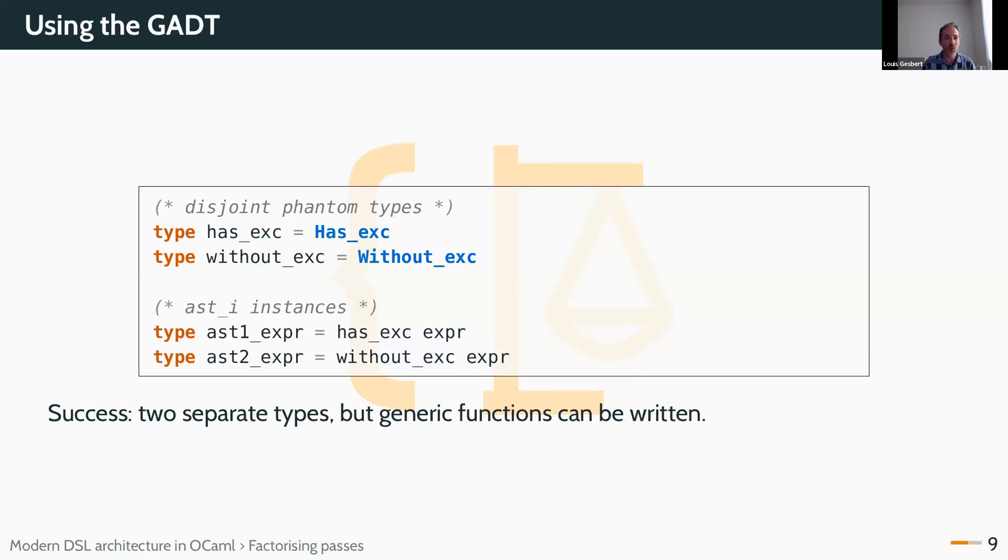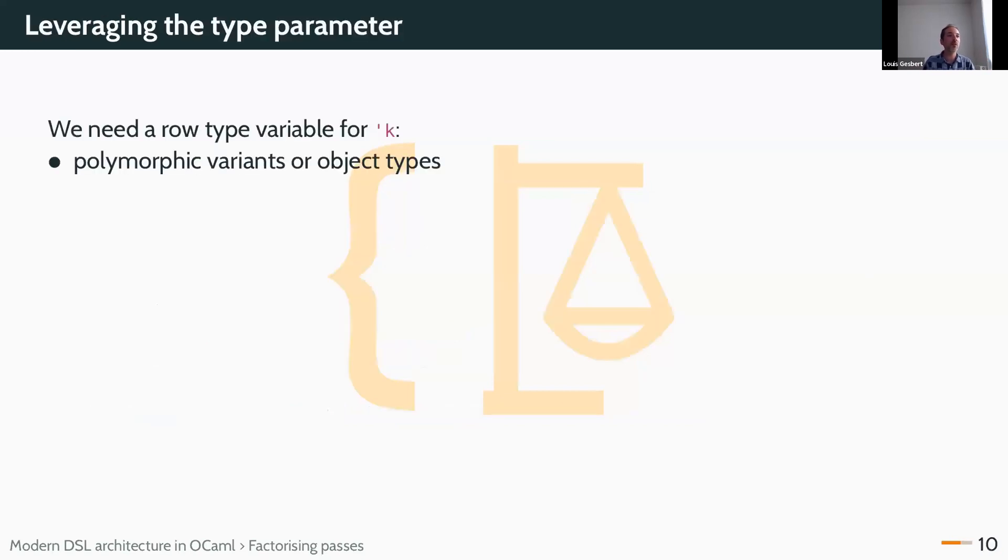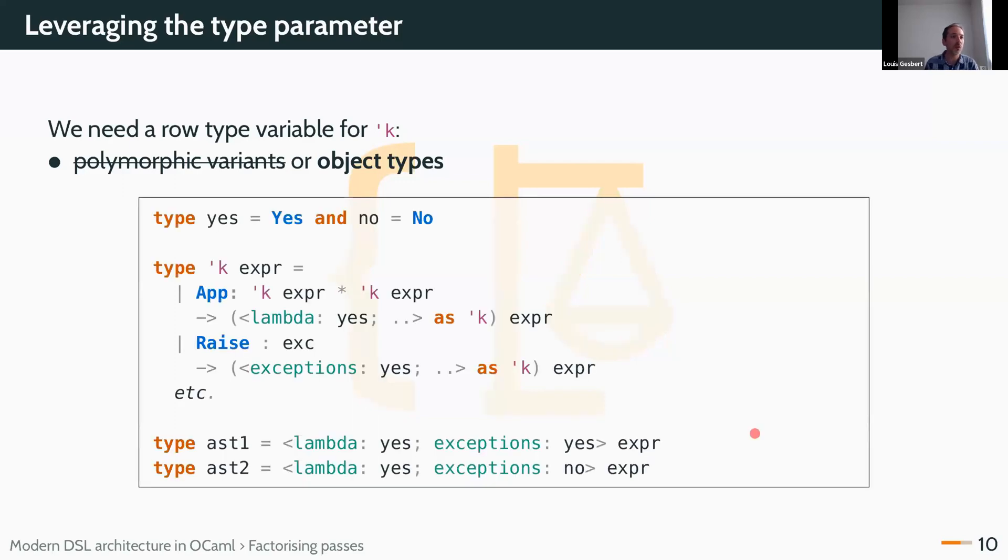I will need basically row type variables. For which there are two providers in OCaml. Polymorphic variants and object types. We've played with both. They both work. But object types ended up being much more convenient to use. Slightly more verbose, but much clearer. And much clearer errors. How does that go? Here are my two ASTs.